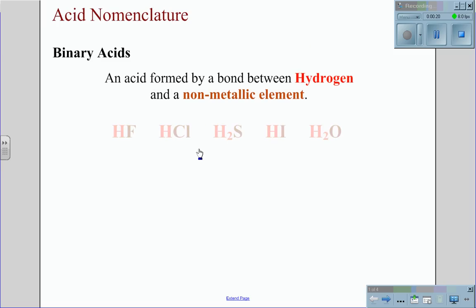Examples of binary acids are HF, HCl, H2S, HI, and H2O. The second basic type of acid are oxyacids.